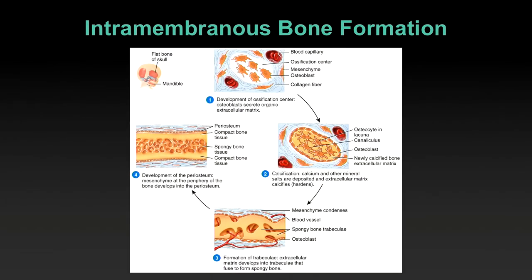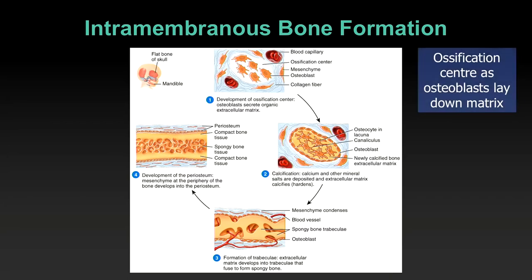Let's look at intramembranous bone formation. The book does a great job with this schematic — four major steps. It is the simpler of the two processes, and it's used for flat bones: bones of the skull, the mandible, and the scapula. Step one: you create what's called an ossification center — a center from which the extracellular matrix and calcified mineral salts are laid down, from which bone formation radiates outward.